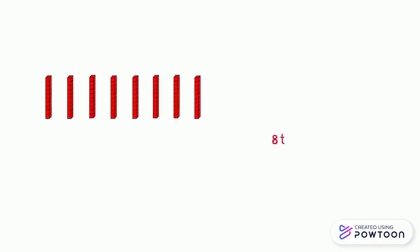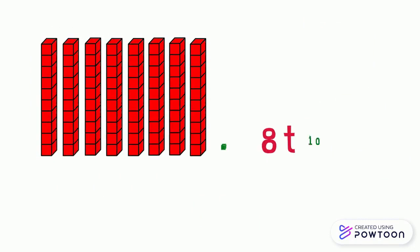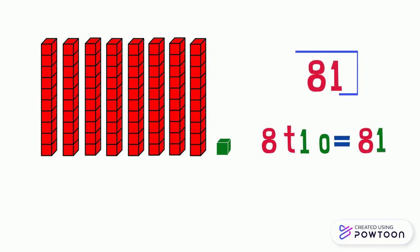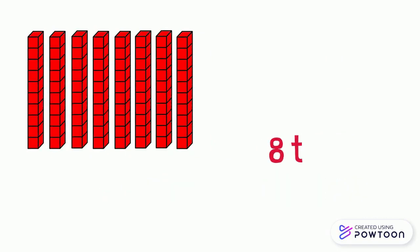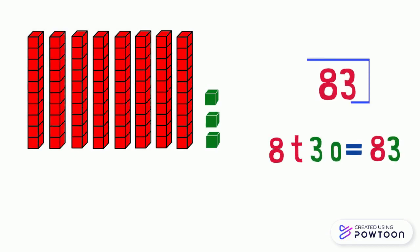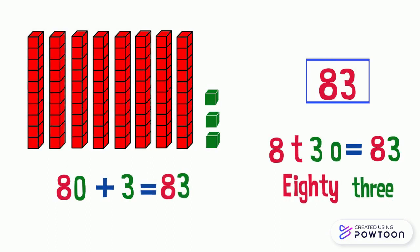Now we have eight tens and one one. It represents the number 81. 80 plus 1 equals 81. 8 tens and three ones represent the number 83. 80 plus 3 equals 83.